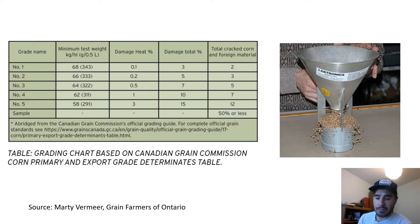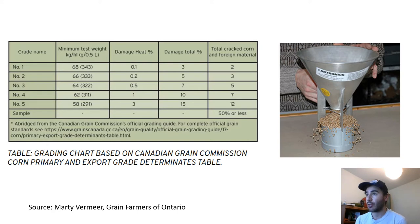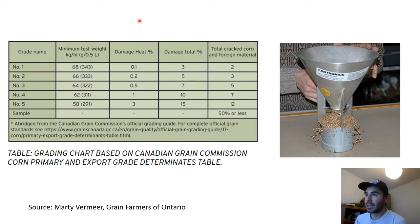Test weight, at its most basic level, is the weight of grain in a given volume. Typically it's measured in grams per half liter. You can see the apparatus used to measure test weight in the photo on the right, and on the left you can see the minimum test weight requirements in grams per half liter for each grade of corn.